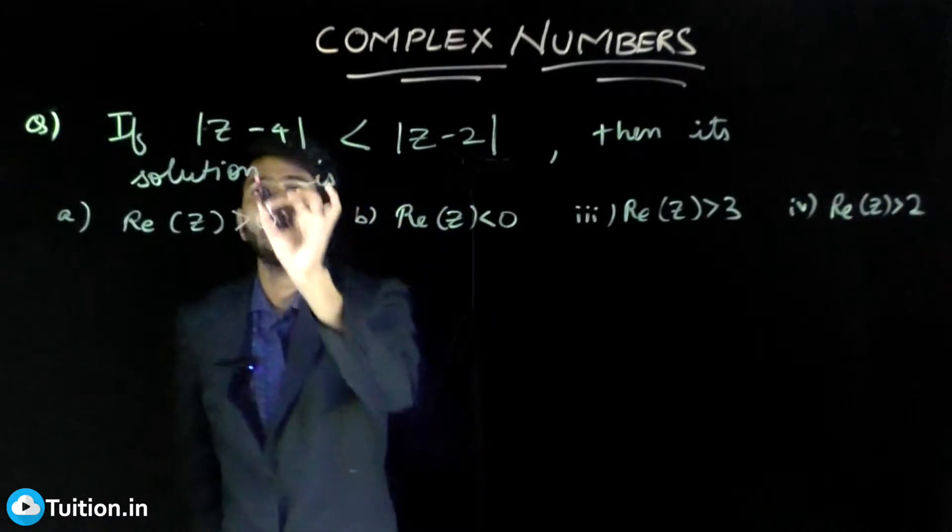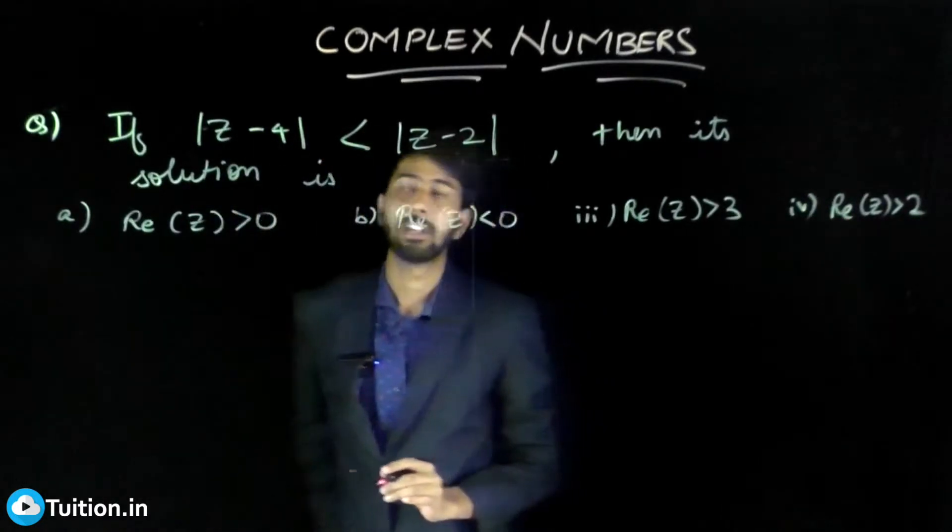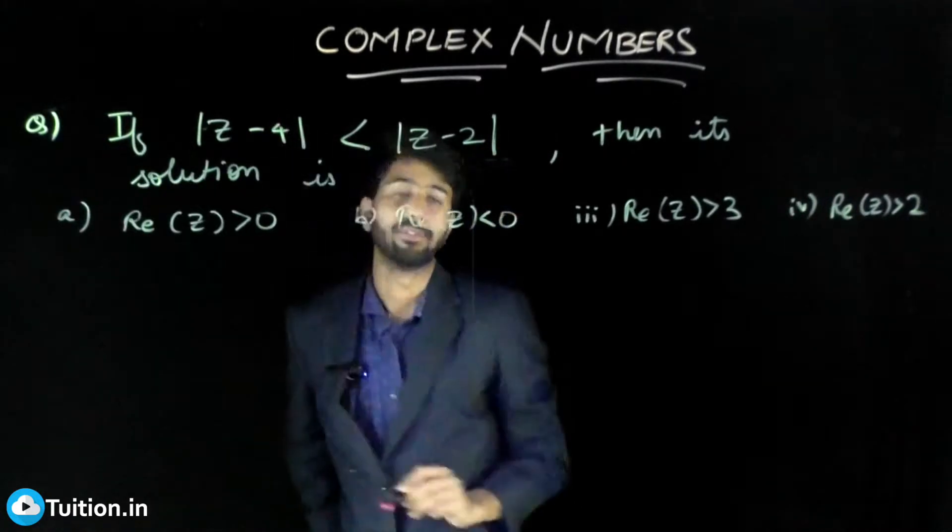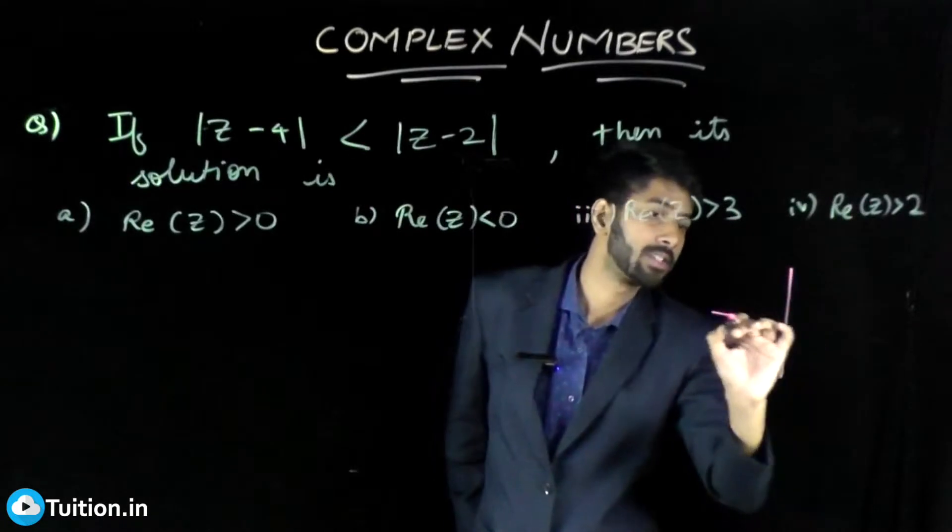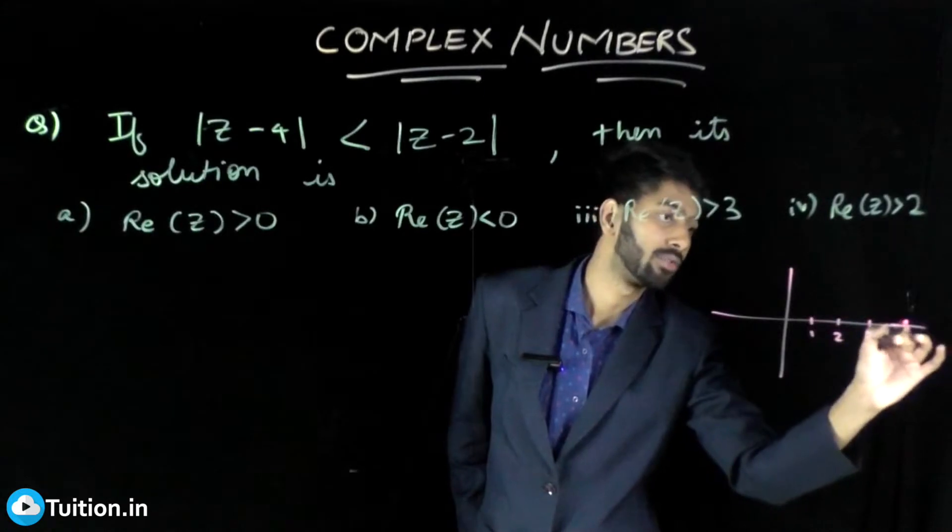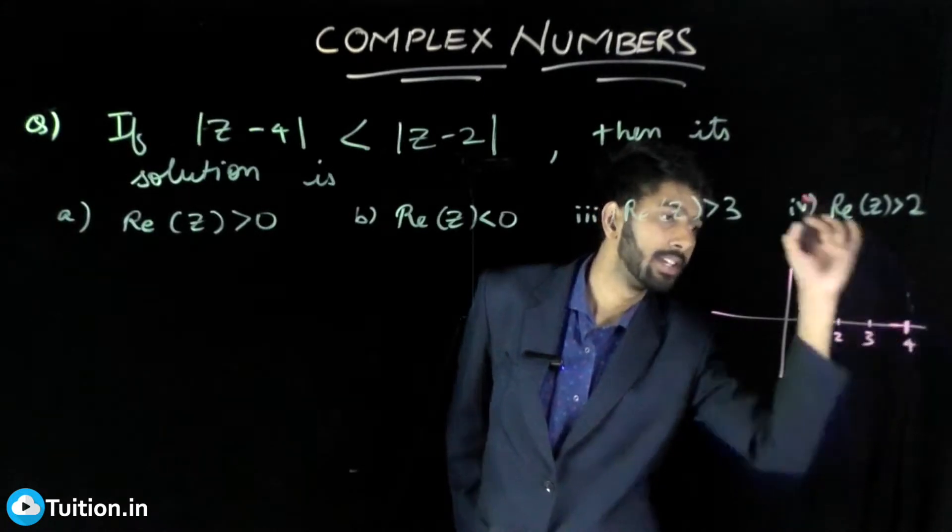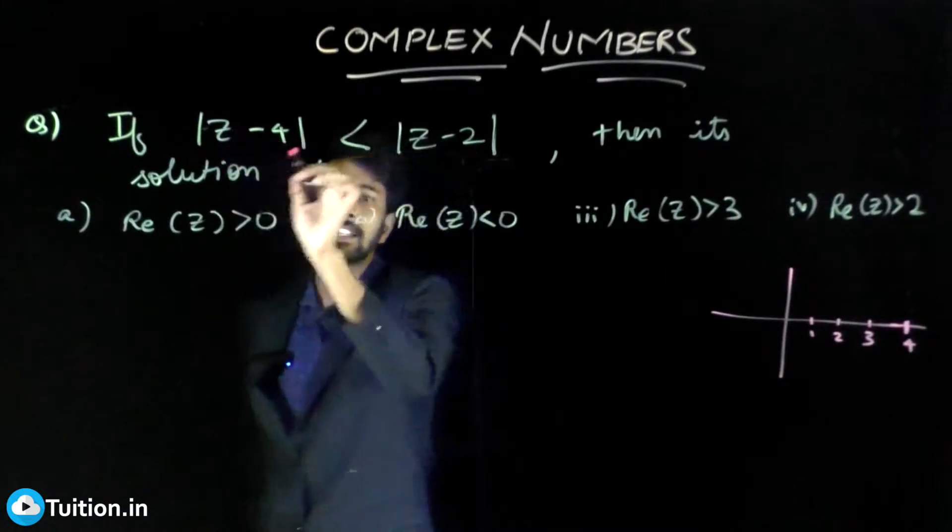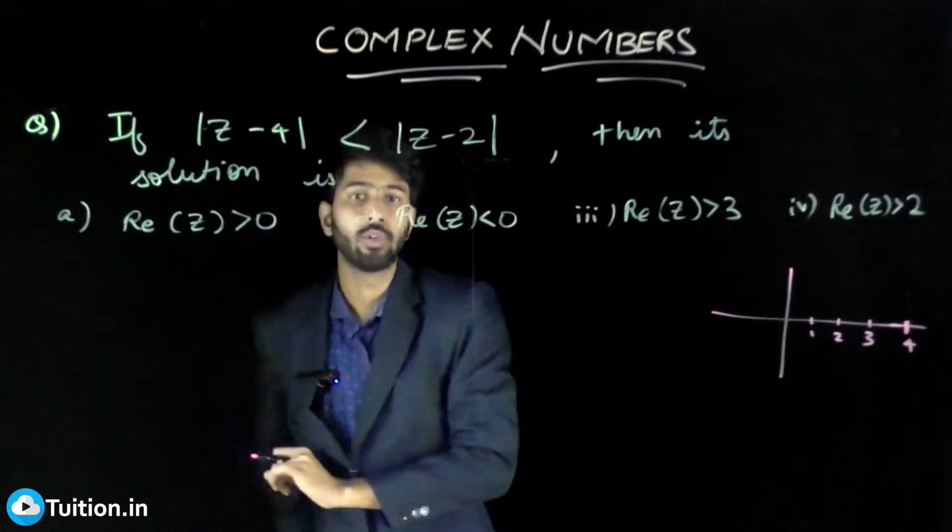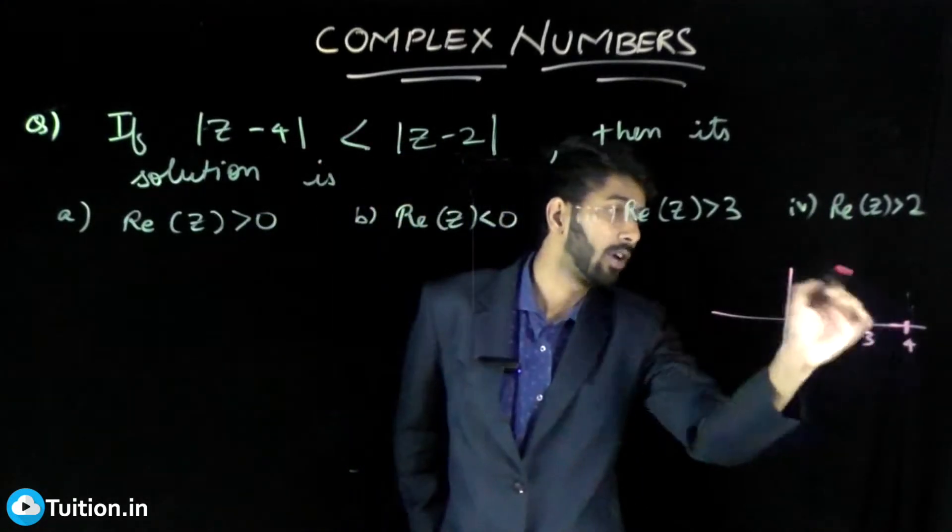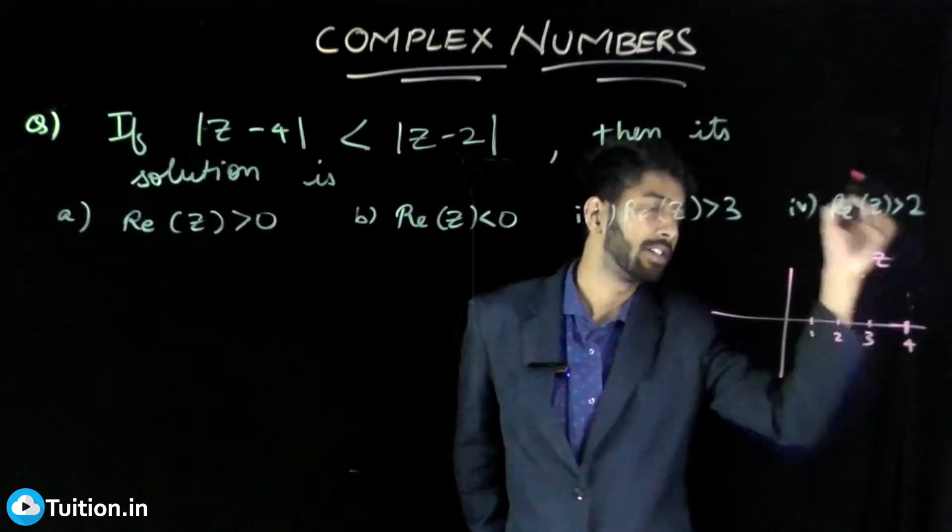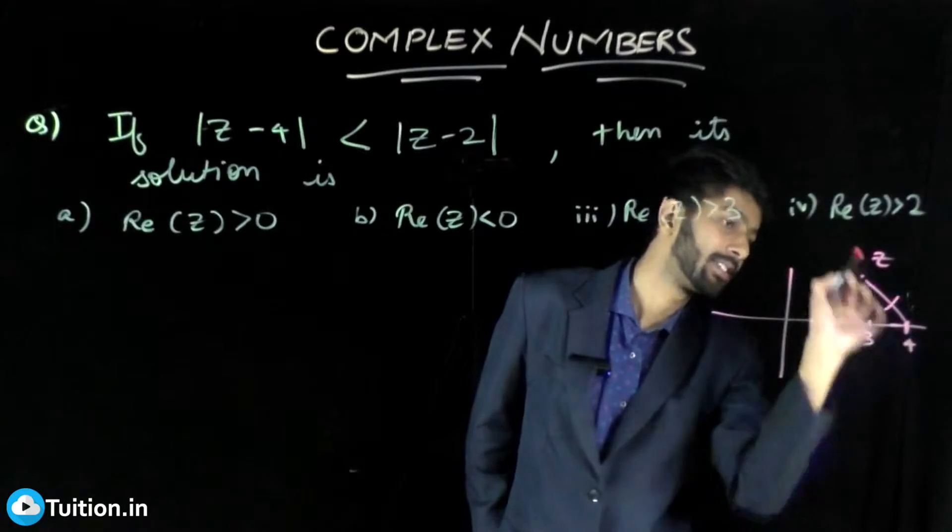What do I mean by |Z - 4|? So |Z - 4| is basically, the complex number 4 is on the x-axis. This is 1, 2, 3, and this is 4. Now Z is some complex number at some distance. |Z - 4| would mean the distance of that complex number from 4. Let your complex number be here, let this be some Z, so |Z - 4| is this distance.